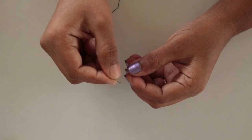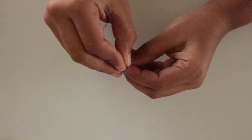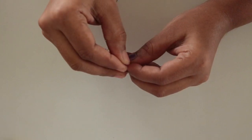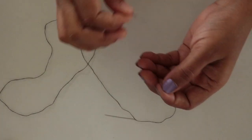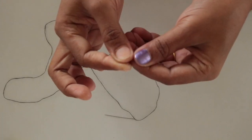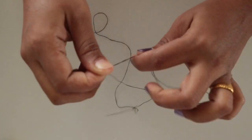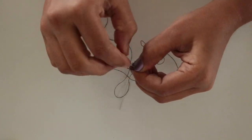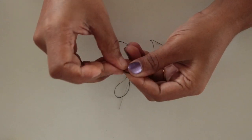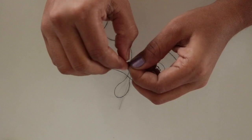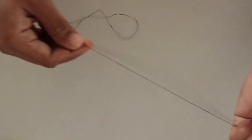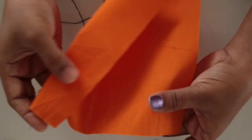First thread your needle. Take one end of thread and insert it into the needle and tie a knot of both ends. Take the thread according to your project, how long you need. Then take your fabric.